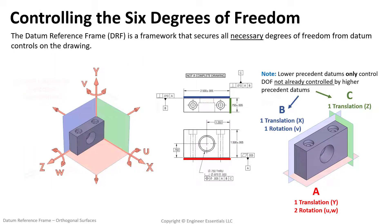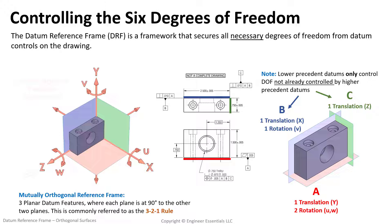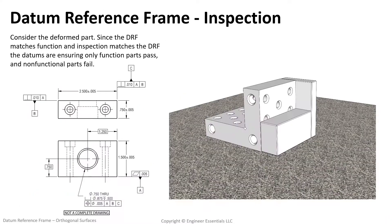Now if you can take one thing away from this video I want you to remember that lower precedent datums only control the degrees of freedom that are not already controlled by higher precedent datums. For this feature control frame A precedes B while A and B both precede C respectively. This datum reference frame locks down all six degrees of freedom using three mutually orthogonal planar datum features. This is what we refer to as the three two one rule.